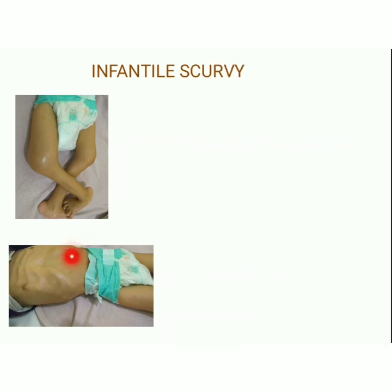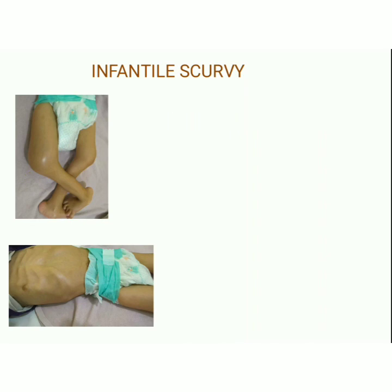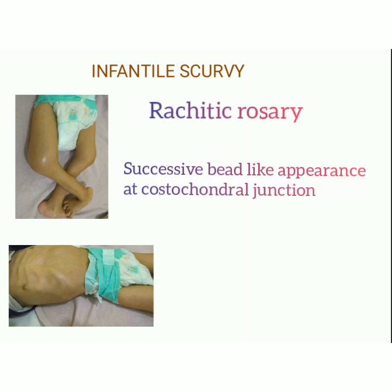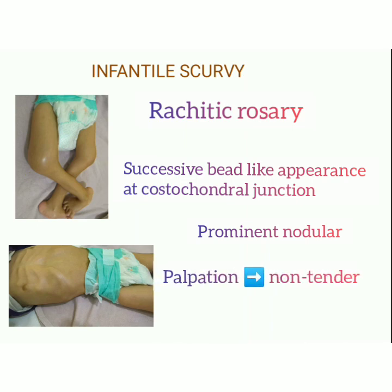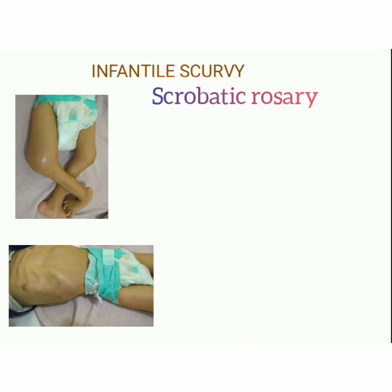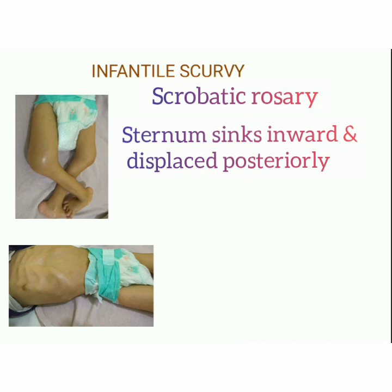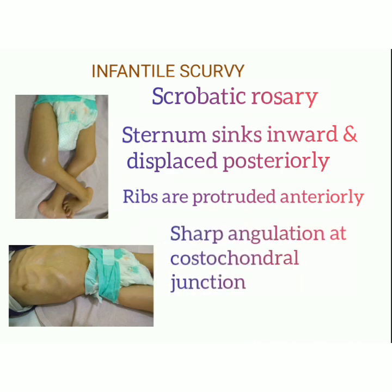Costochondral bleeding may occur in both rachitic rosary and scorbutic rosary, so we need to differentiate them. In rachitic rosary, there is a successive bead-like appearance at the costochondral junction with prominent nodulatory appearance, and on palpation the bone is not tender. Whereas in scorbutic rosary, the sternum sinks inward and is displaced posteriorly, the ribs protrude anteriorly, there is sharp angulation at the costochondral junction, and on palpation the bone is tender. That is the main difference between rachitic rosary and scorbutic rosary.